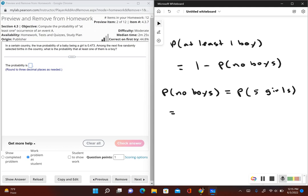So first, the probability that the first baby is a girl is 0.473. Then the probability that the next one is a girl, also 0.473. And then the third one, 0.473. Fifth one, put it down here, 0.473. I'm sorry, that was the fourth one. And then the fifth one, 0.473.